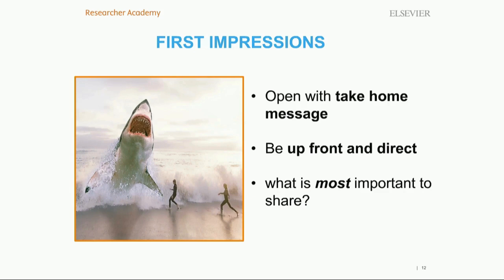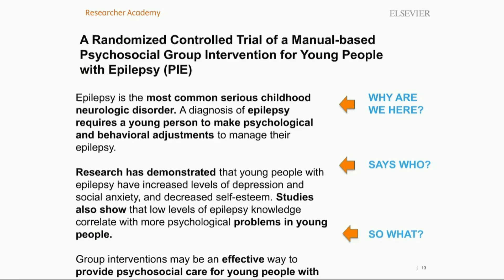A good place to start is the beginning. When I think about the beginning of a lay summary, I like to think about first impressions. The lay summary differs from peer scientific writing in that it's important to open with your take-home message. You want from the get-go to be upfront and direct with your reader and really kick things off with the most important thing you would like to share. Let's take a look at a lay summary example that breaks down the messaging in an introductory paragraph.